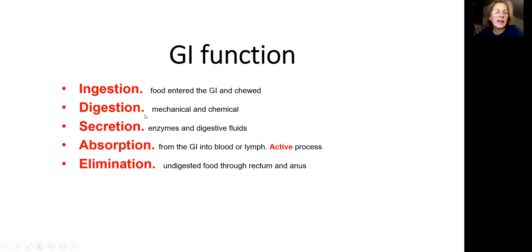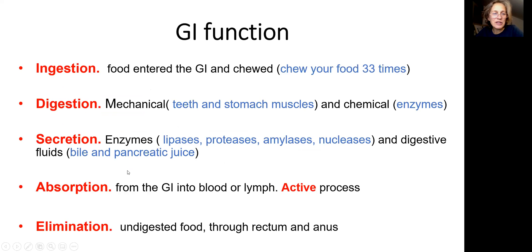Digestion is done mechanically and chemically. We also secrete enzymes and digestive juices into the digestive tract. Absorption from the digestive tract into the bloodstream and lymph is done actively. I will elaborate more on that topic a little bit later. Elimination is done through the rectum and anus.